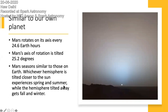Mars is very similar to our own planet. The picture on the right side is clicked by NASA and shows a sunset happening on Mars. Mars rotates on its axis every 24.6 Earth hours, compared to our 24 hours. Mars's axis of rotation is tilted at 25.2 degrees, while Earth's is 23.5 degrees. Mars has seasons similar to those on Earth — whichever hemisphere is tilted closer to the Sun experiences spring and summer, while the hemisphere tilted away gets fall and winter.